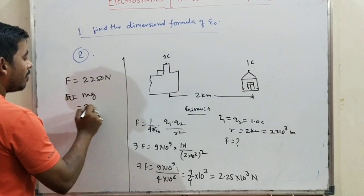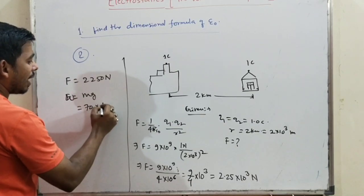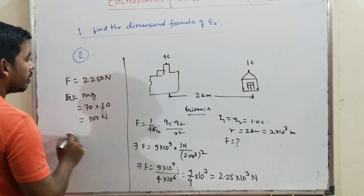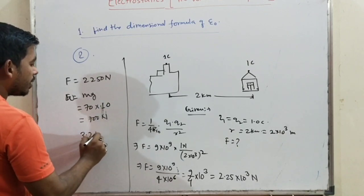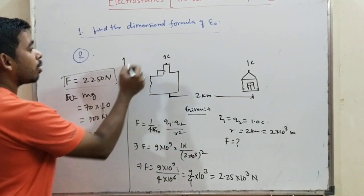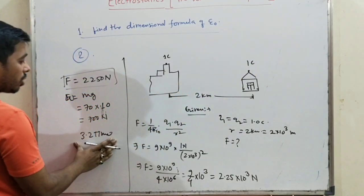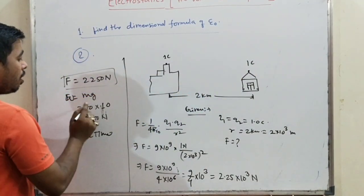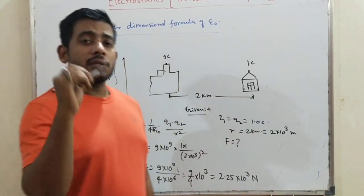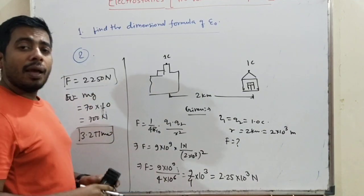My weight: 70 kg × 9.8 ≈ 700 Newton. The calculated Coulomb force is 2500 Newton, which is approximately 3.2 times my weight. So this electrostatic force is more than 3 times a person's body weight.